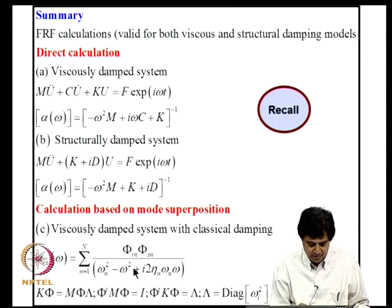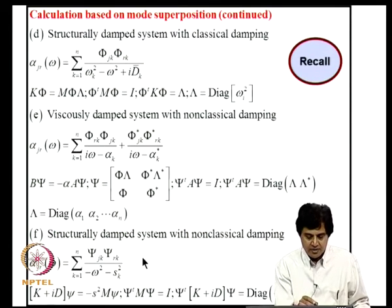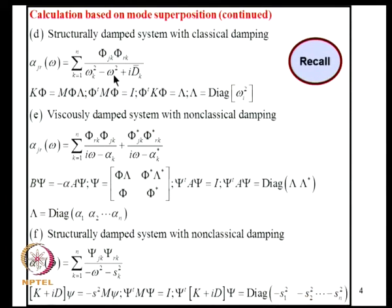This is for classical viscous damping, this is for classical structural damping, this is for non-classical viscous damping, and this is for non-classical structural damping. In each case there is a different interpretation for the natural coordinates, but the common feature is that an orthogonality relation is satisfied by the modal matrices with respect to the structural matrices, enabling uncoupling of the equations of motion.